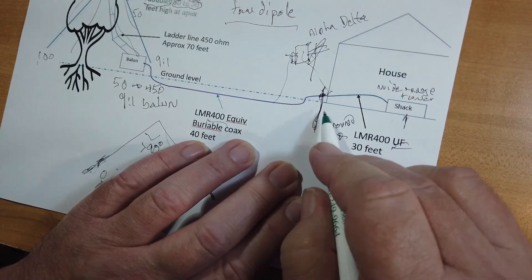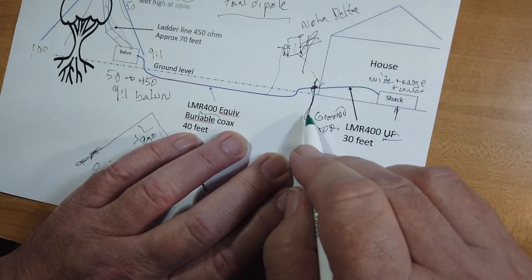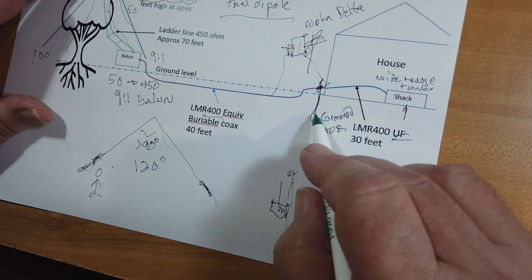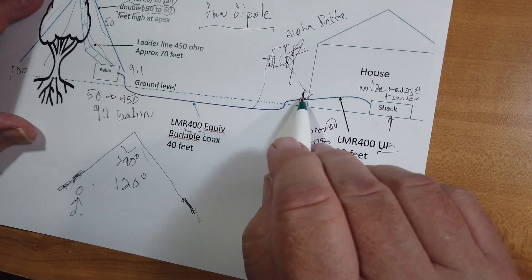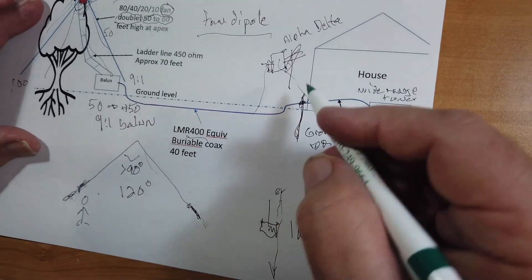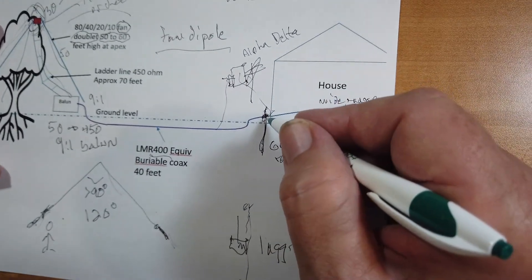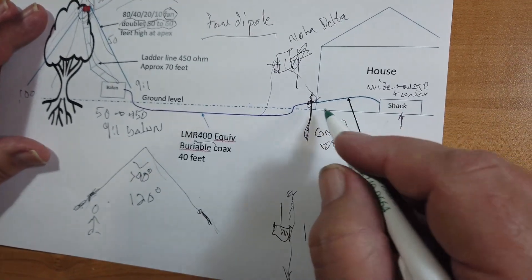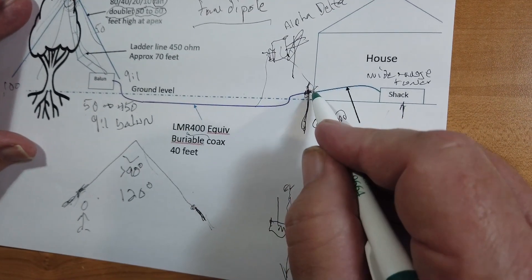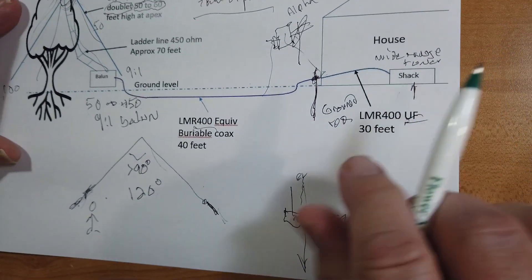By the way, that will reduce or eliminate a lot of the noise that you might find on the antenna otherwise. Also, provide you some protection. The ground needs to be outside the house. You've got your lightning arrestor outside the house before anything goes inside the house.